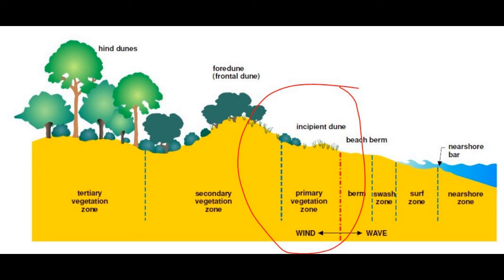The incipient dune is the first area of the coastal dune system where you're going to see some vegetation. This vegetation has to withstand some really harsh conditions like high sun exposure, exposure to strong winds, salt spray, sand burial, and being pummeled by sand. So this vegetation is going to be really hardy and not many species can handle all those conditions.